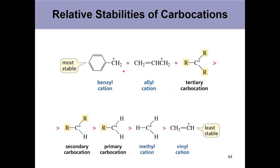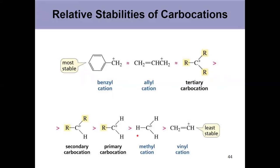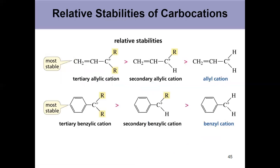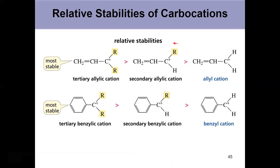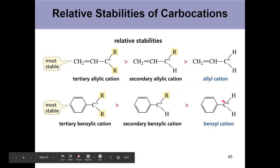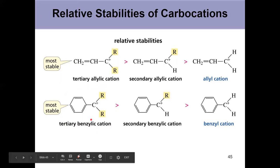A benzyl cation is approximately equal in stability to something that's allyl and tertiary, and of course that's greater than secondary, primary, methyl, and vinyl. Not all allylic and benzylic cations are created equal — just like before, the more substituted they are, the more stable due to hyperconjugation. Among allyl cations, unsubstituted is least stable, then secondary, then tertiary. Tertiary benzylic is greater than secondary benzylic, which is greater than a plain benzyl cation. So the most stable carbocation in organic chemistry one is a tertiary benzylic carbocation.